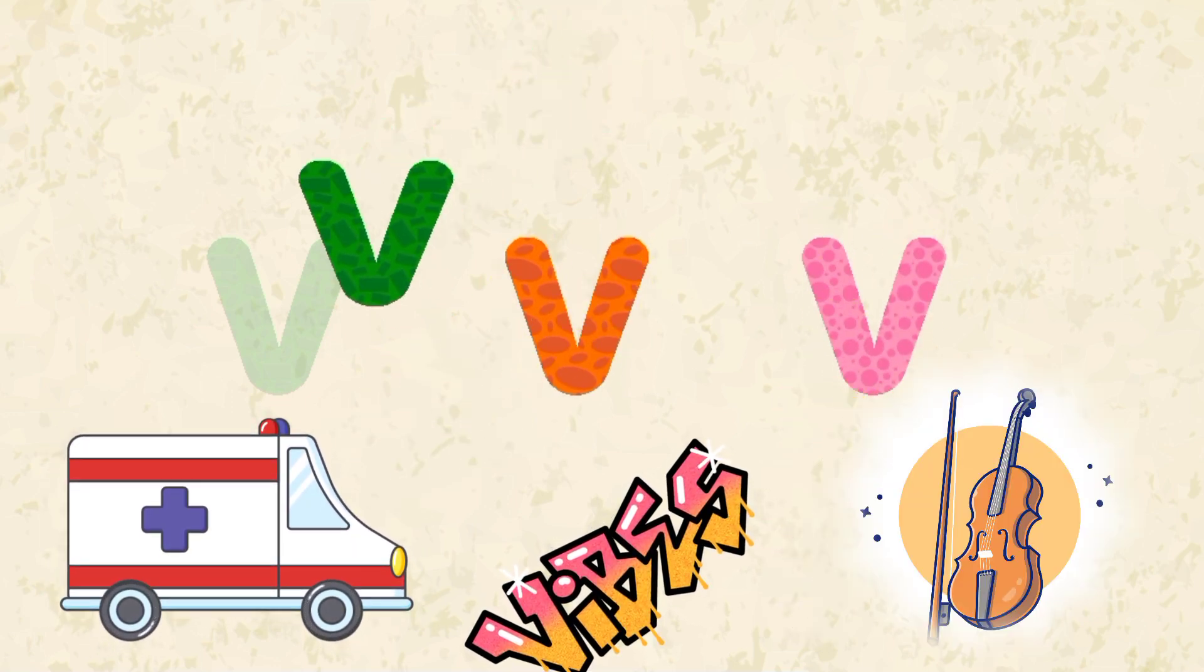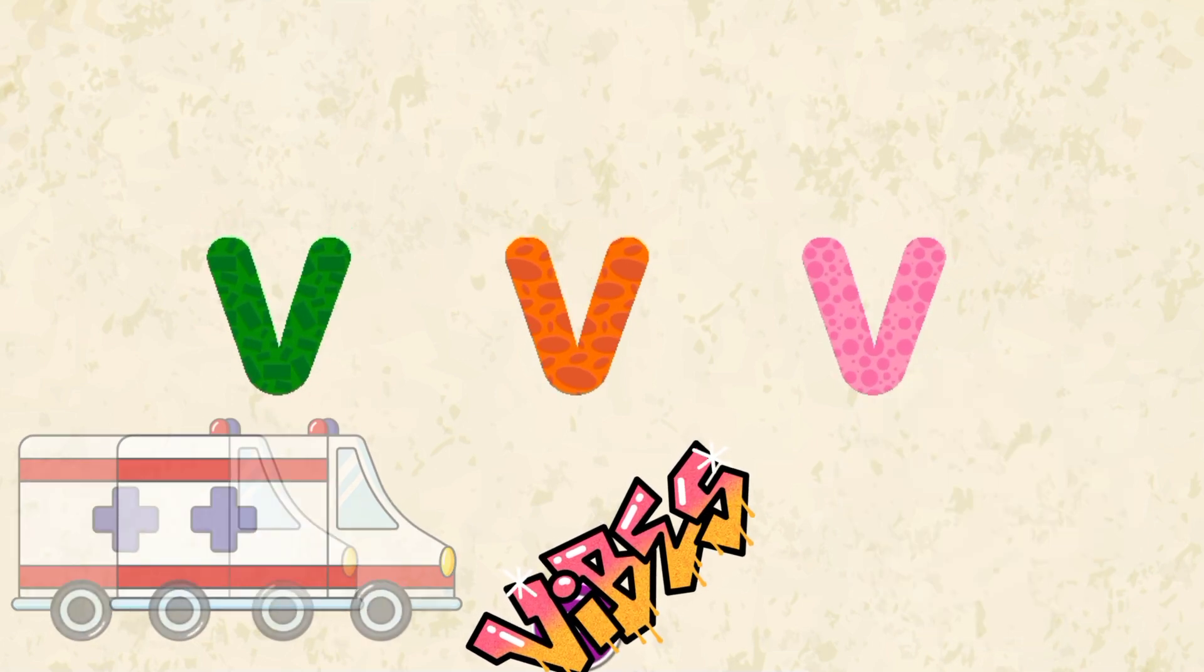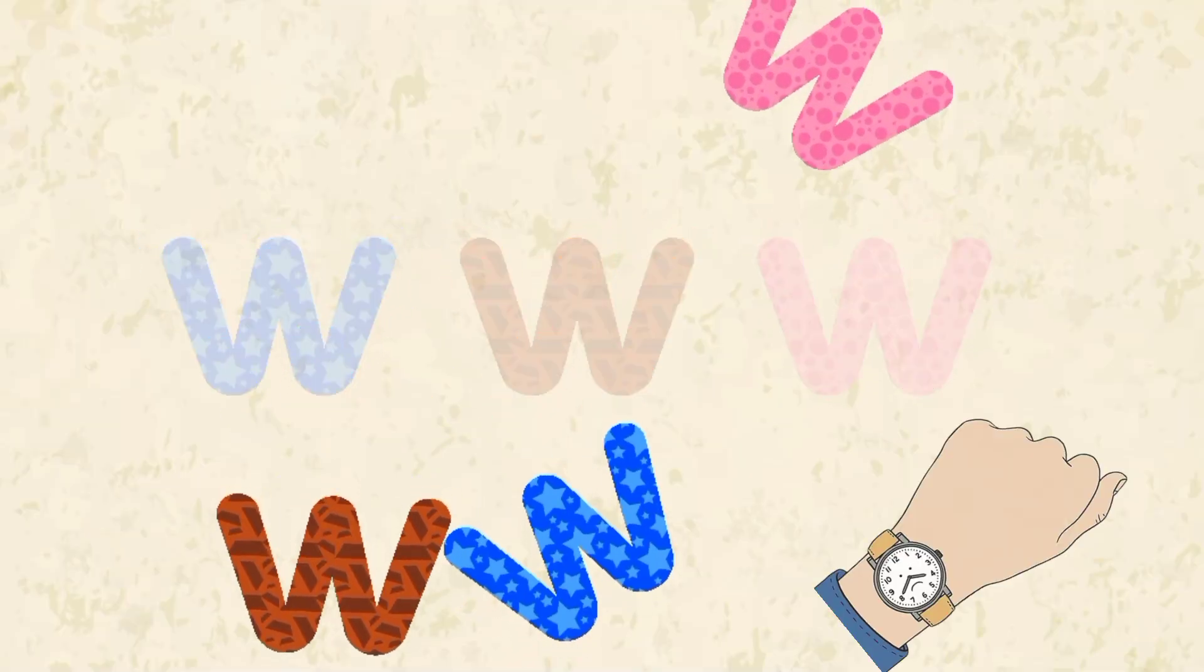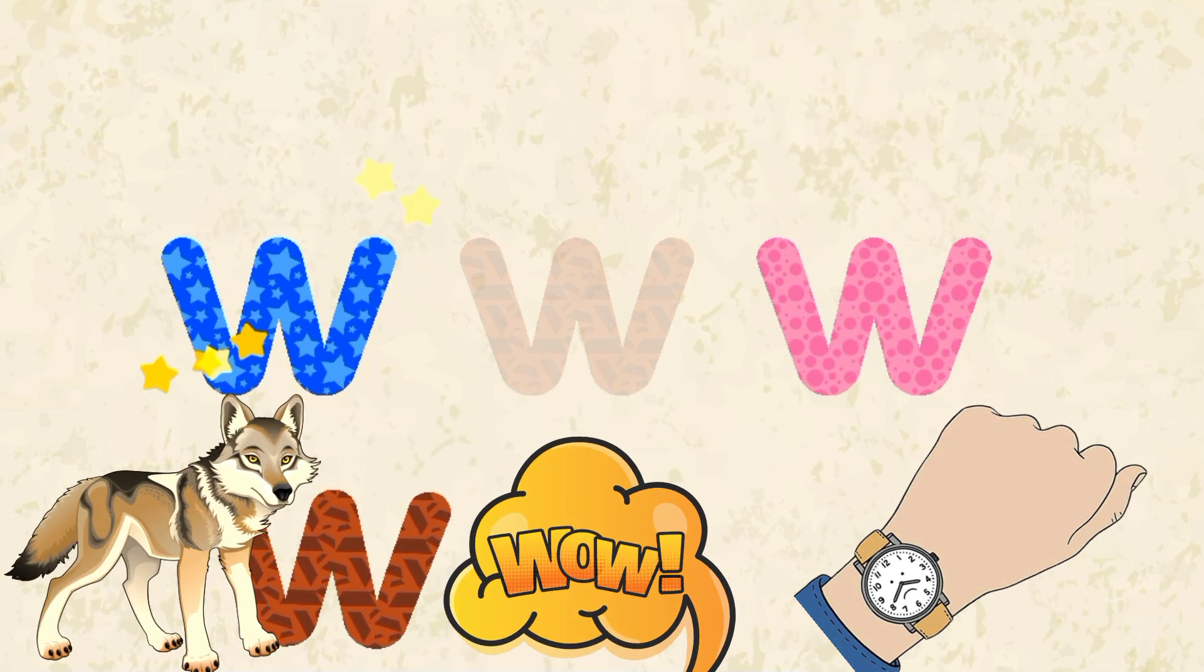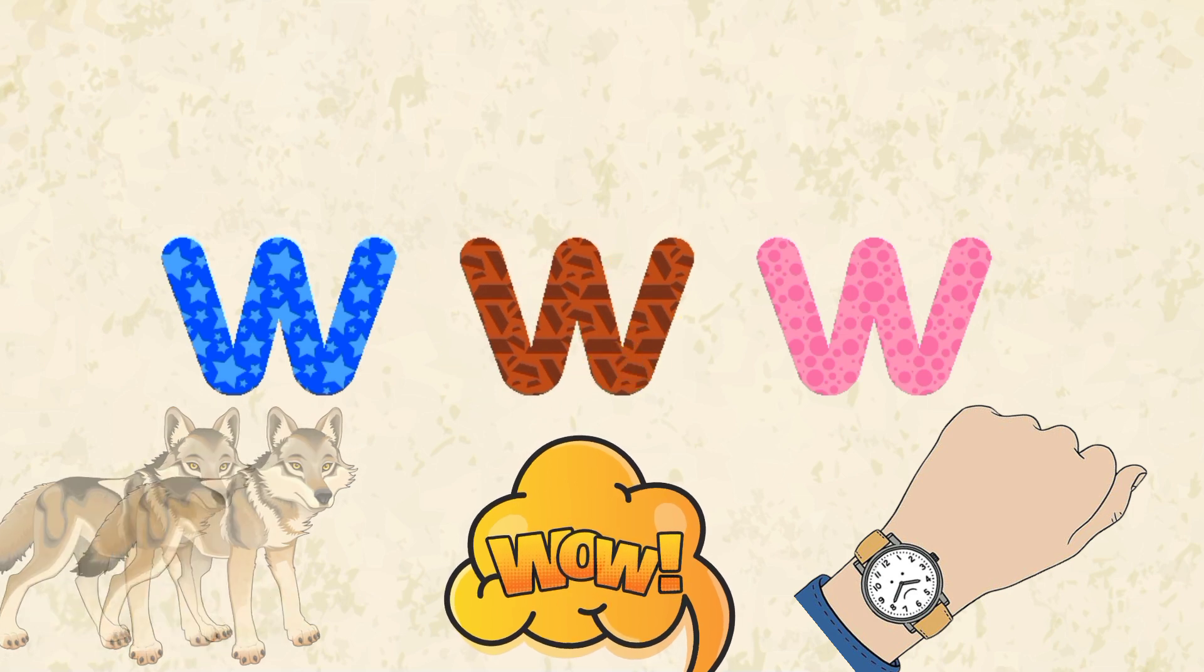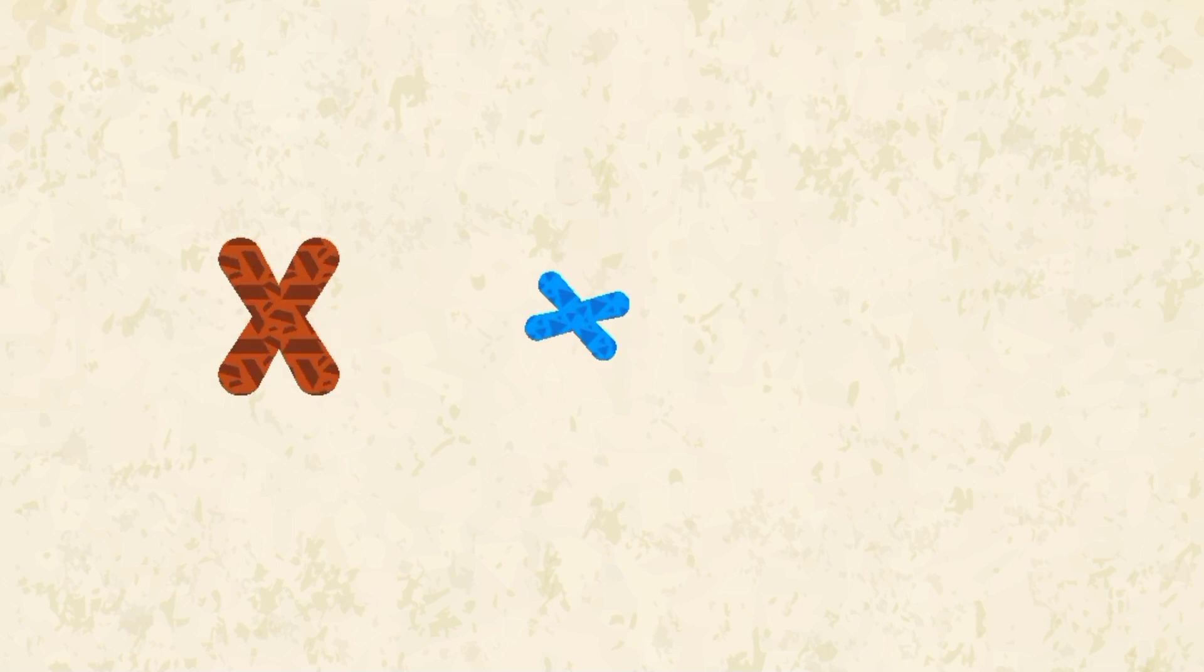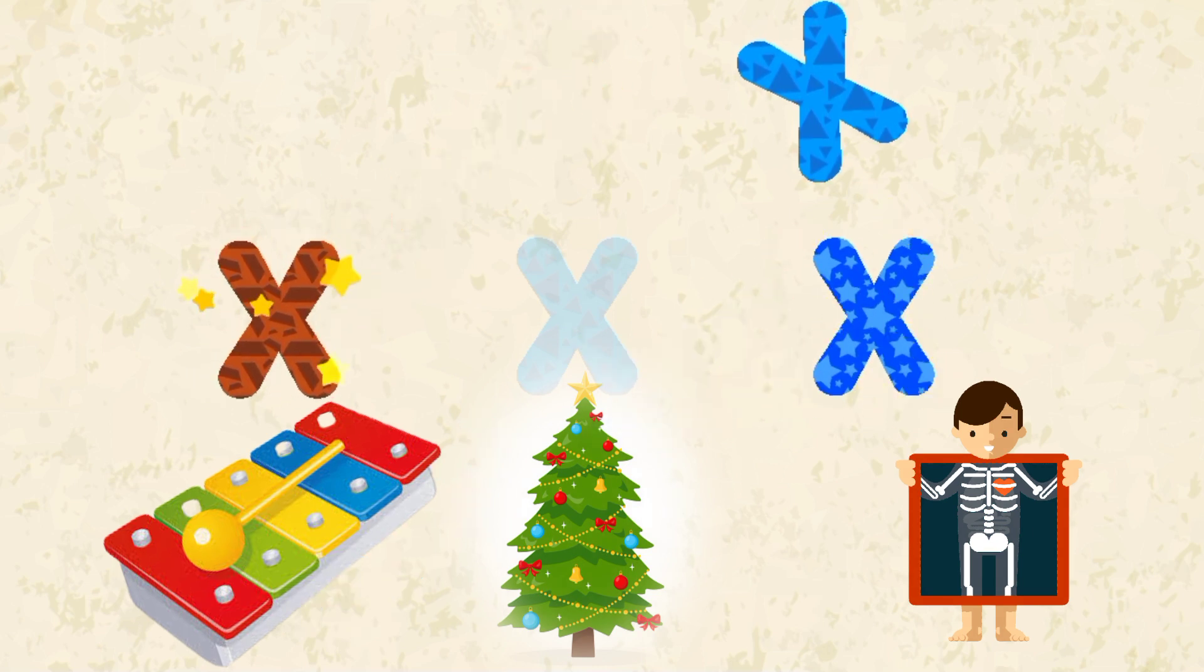Letter V. V for Van, V for Vest, and V for Violin. W. W for Walrus, W for Watch, and W for Whale. Letter X. X for Xylophone, X for Christmas Tree, and X for X-Ray.